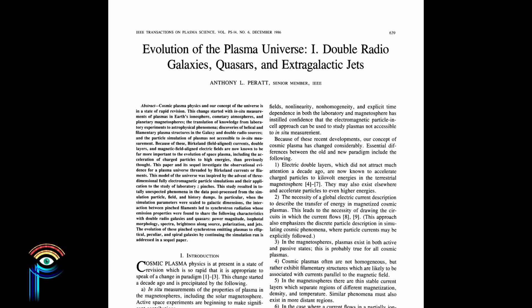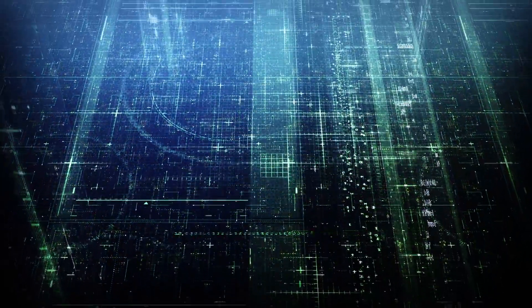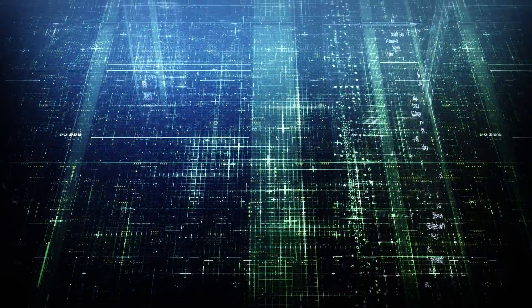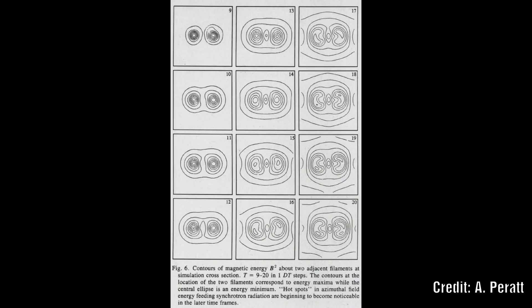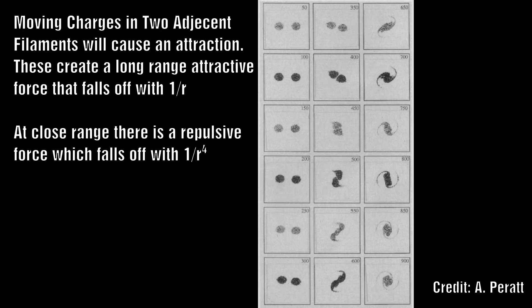Peratt, in his paper on the evolution of the plasma universe, wanted to extend the study of cosmic plasmas to the galactic dimension — approximately 50 kiloparsecs in width — by means of three-dimensional, fully electromagnetic and relativistic particle-in-cell simulations. The simulation models a magnetic field-aligned neutral plasma filament in the presence of a field-aligned electric field. To study the evolution of interacting filaments, a second filament was placed adjacent to the first. He investigated as many as six filament interactions. Due to the 1/r force between the filaments, it appeared that a majority of cosmic plasma phenomena are the result of two or at most three interactions among the closest filaments.